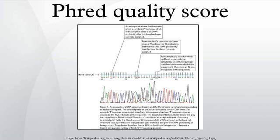Phred quality scores were originally developed by the program Phred to help in the automation of DNA sequencing in the Human Genome Project. Phred quality scores are assigned to each nucleotide base call in automated sequencer traces.